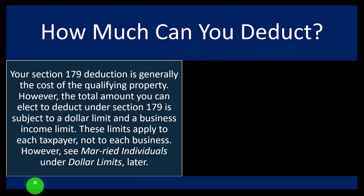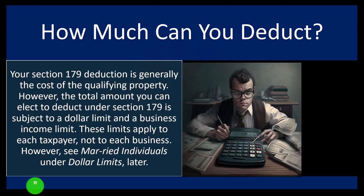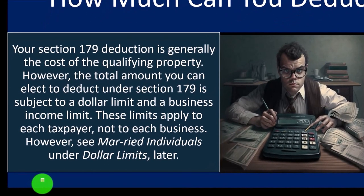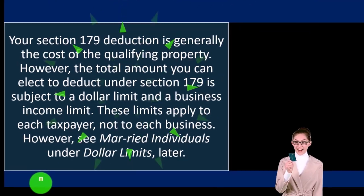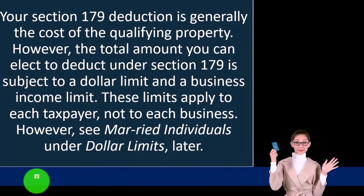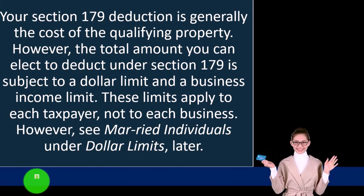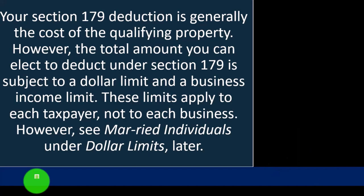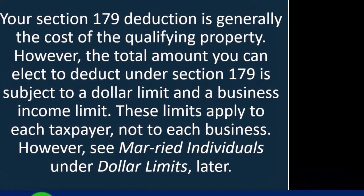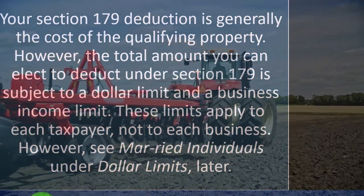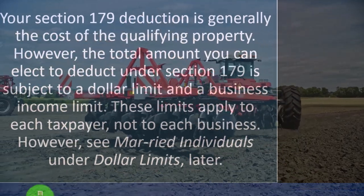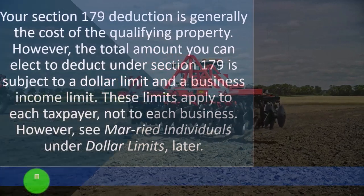How much can you deduct? Your Section 179 deduction is generally the cost of the qualifying property — basically whatever you paid for it. Note how large that deduction could be, since normally depreciation spreads the cost over time because equipment generates revenue over many years. This is obviously a substantial deduction for businesses buying equipment, which is part of the legislative point — stimulating the economy by encouraging investment in larger equipment.